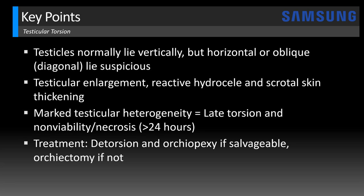It's important to note that although the likelihood of testicular salvage is related to the time of symptom onset and subsequent detorsion, it's also related to how tightly the cord is twisted. For example, if the cord is twisted 720 degrees the testis may become non-salvageable before 24 hours, whereas if there's less than 360 degrees of torsion the testis may still be viable for days. So the take-home point: don't delay the diagnosis and subsequent surgery.